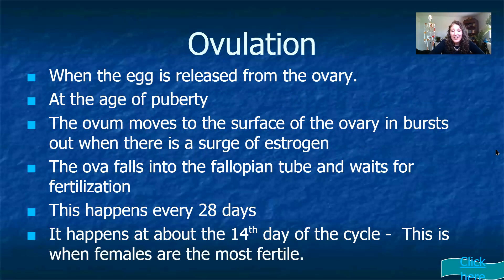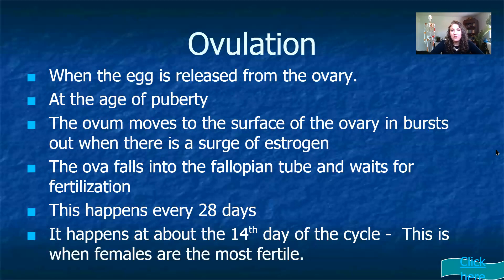Ovulation is the term for when an egg is released from the ovary. This process begins when a female reaches puberty. Ovulation involves the ovum developing a couple of layers around it; those layers are shed as the egg bursts out of the ovary and is swept into the fallopian tubes. This happens every 28 days and alternates ovaries — one month left, one month right. About 14 days through that cycle is when the egg is actually released and is in the fallopian tube, which is the most common place for fertilization to occur.